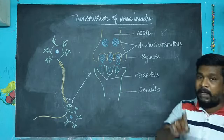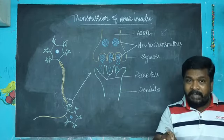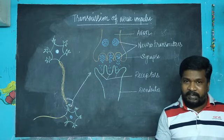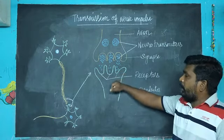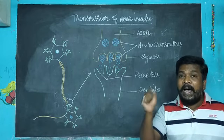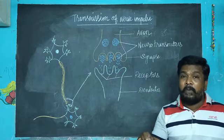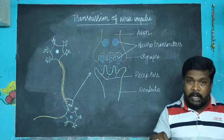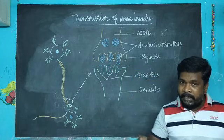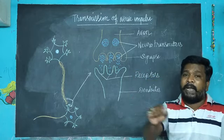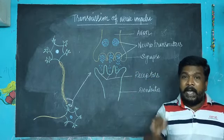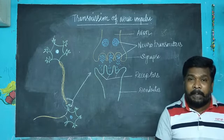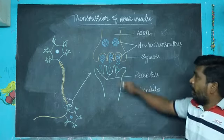Effector organ is the place where we feel pain or feelings. The brain sends signals to the effector organs like muscles.